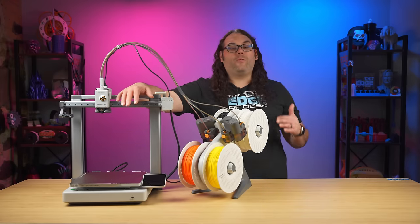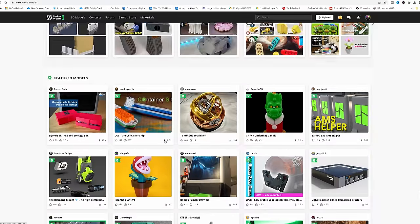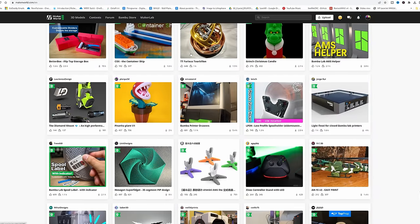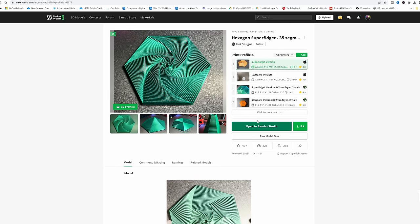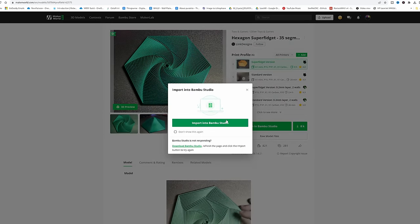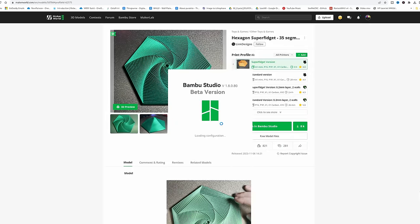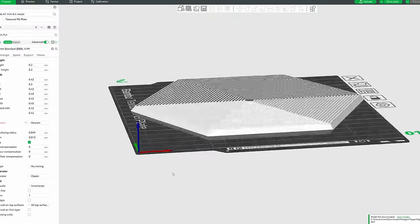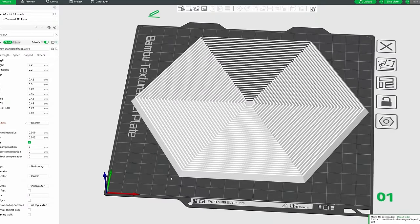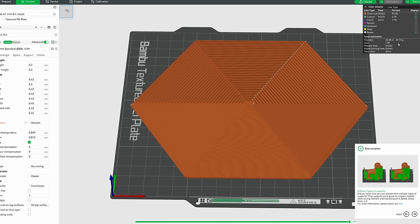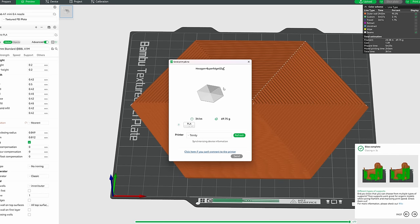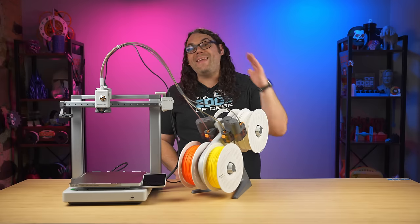On top of that, the slicer integrates with Maker World. Maker World is this awesome place where you can jump in, find models that other users have submitted and send them straight to your printer with no slicing or anything. All you have to do is choose a model, select print, choose your printer and shoot it over. It is literally that easy. And if you're getting started into 3D printing, this is the fastest way to send something to your printer.